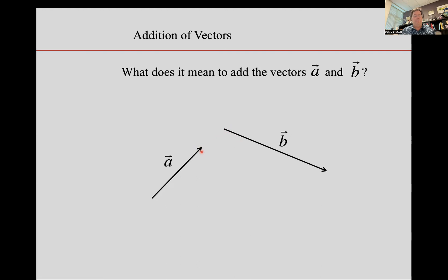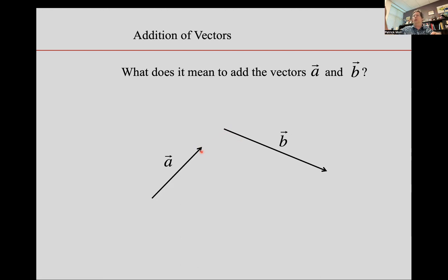For addition of vectors — two or more vectors — just line them all up head to tail, head to tail, head to tail. The sum is the vector that goes from the tail of the very first vector in the sum all the way to the head of the last vector of the sum.